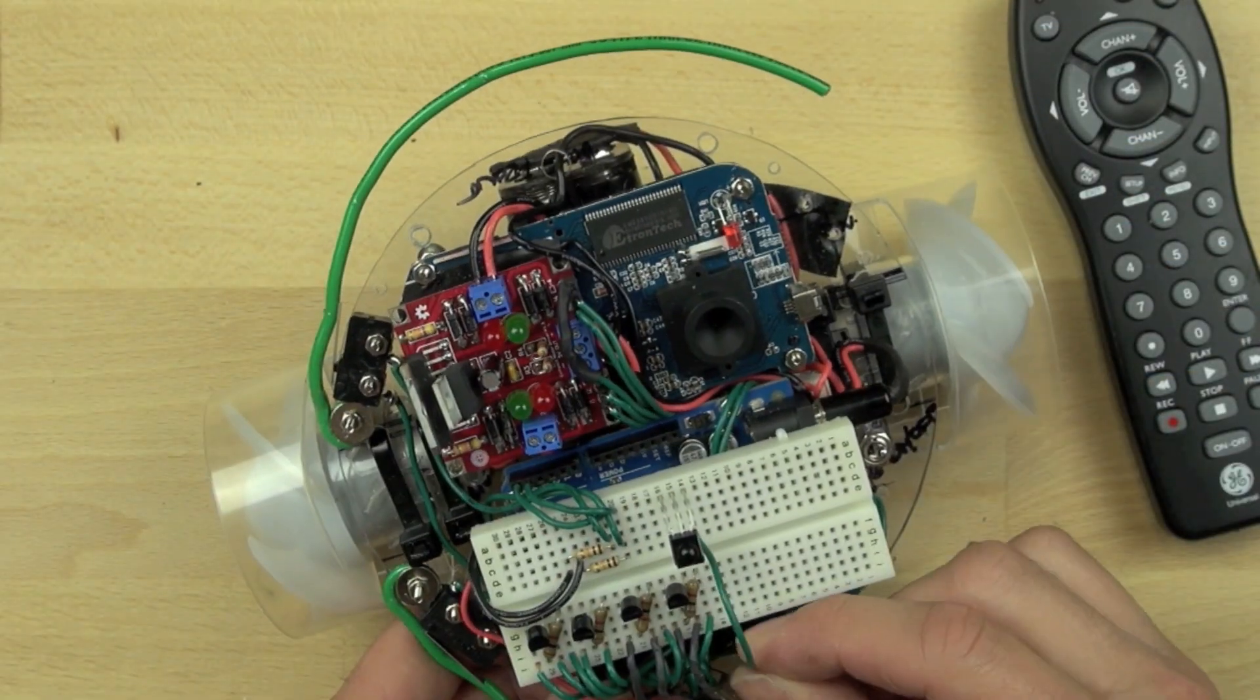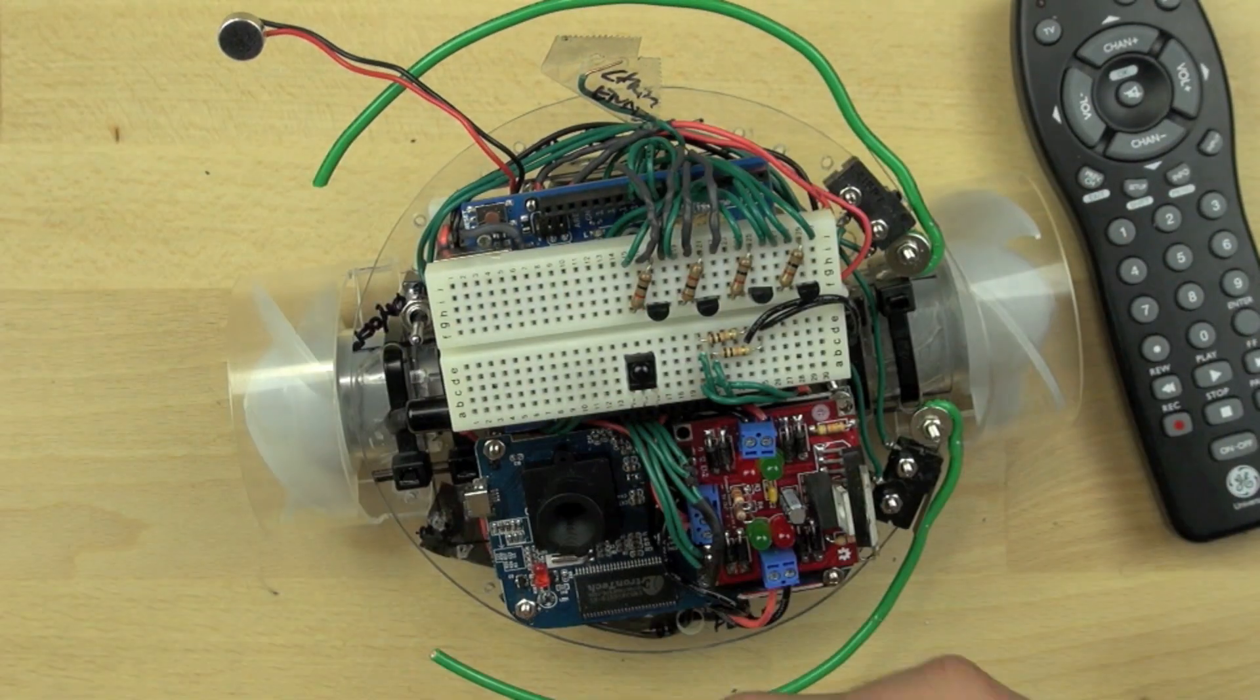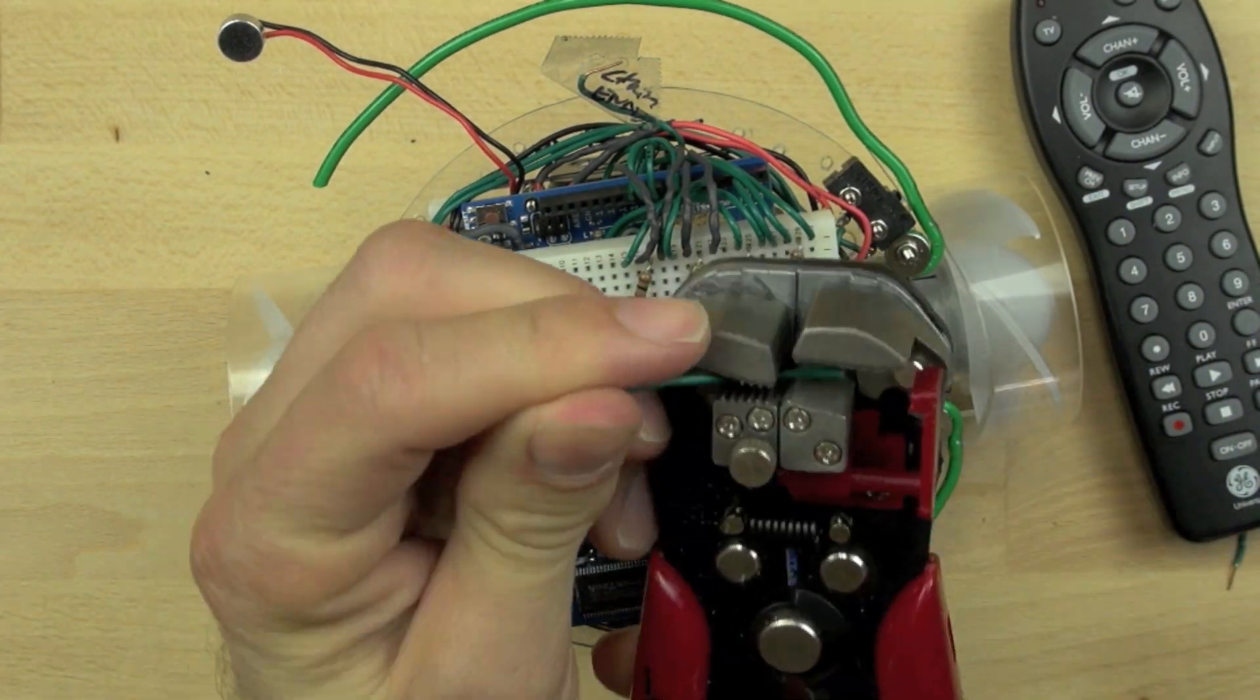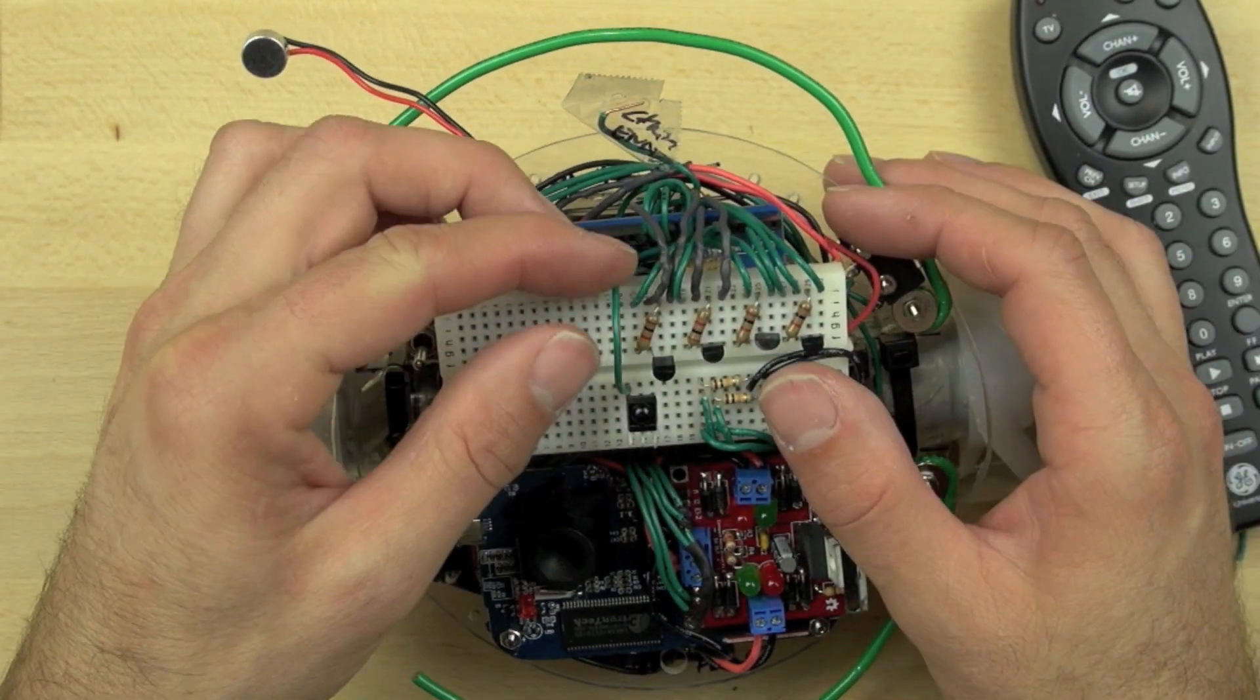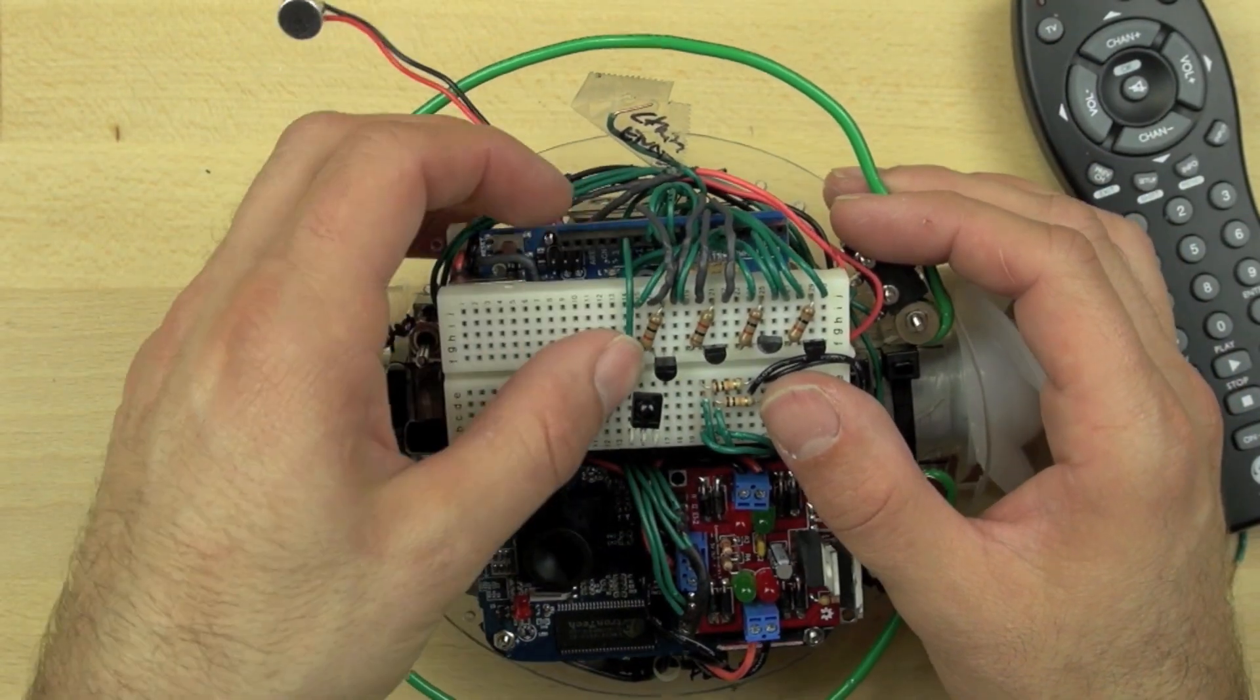Now, the lead that is on the left-hand side when you're looking at the BitsyBot is the one that we want to connect to our Arduino digital pinout number 12.